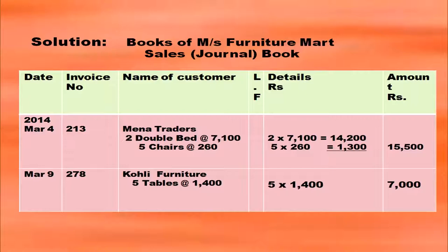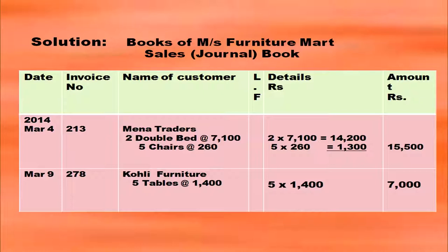Draw the format of the sales book with the heading 'Books of Messers Furniture Mart' and write 'Sales Book' or 'Sales Journal'. Draw the format with date, invoice number, name of customer, ledger folio, details, and amount. Write the date with year first, then month, then date. Pick up the invoice number from the question. For Mina Traders, write each detail in the details column.